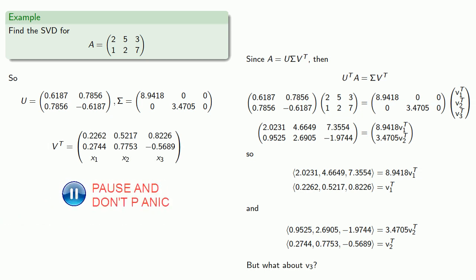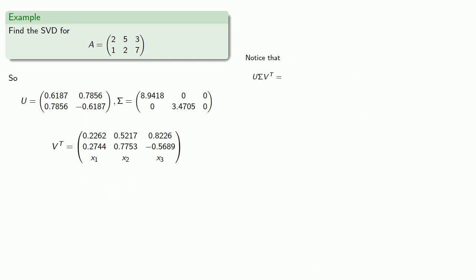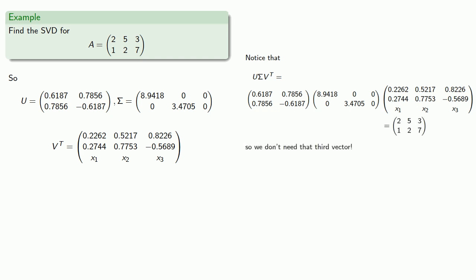Now before we go out and find that third vector, let's see if we actually need it. So remember the idea here is that we want to write A as a product U sigma V transpose. But notice that if we take the three matrices we already have, U sigma and V transpose, if we multiply them together, that third vector doesn't appear anywhere in the answer. We actually get our original matrix A, and so we don't need that third vector.